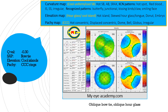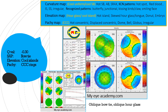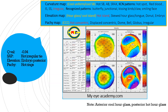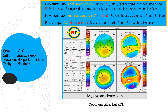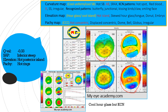Look at this one: a symmetrical oblique bow tie, cool eye lens on both elevation maps, and CCC — central cool concentric rings on pachymetry. So it's a normal cornea. Then a hot irregular bow tie, cool eye lens on the anterior elevation but hot eye lens on the posterior elevation, and hot concentric rings — most probably an abnormal cornea, confirmed by the indices. Then inferior steep, cool eye lens anteriorly but hot eye lens on posterior elevation, and hot concentric rings — again abnormal, confirmed by the indices.